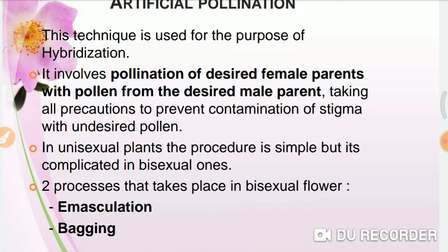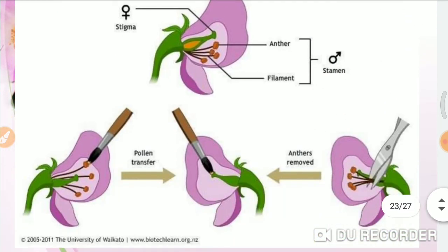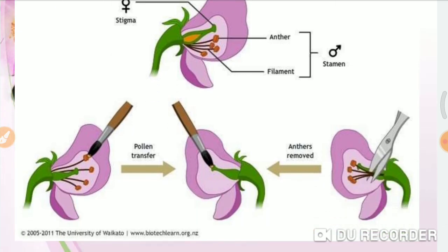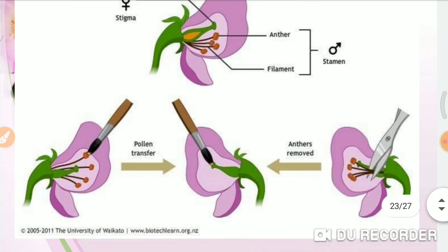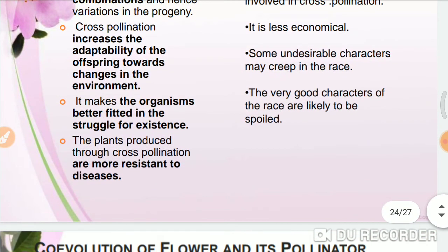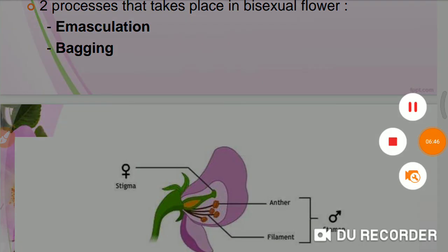In artificial pollination, used for the purpose of hybridization, it involves pollinating a desired female parent with pollen from a desired male plant. All precautions are taken to prevent contamination of the stigma with undesired pollen. With the help of forceps, the anthers are removed first — this is called emasculation. Then the stigma is pollinated with the desired pollen using a brush, and after that it is bagged and tagged. The first step is emasculation and the second is bagging.